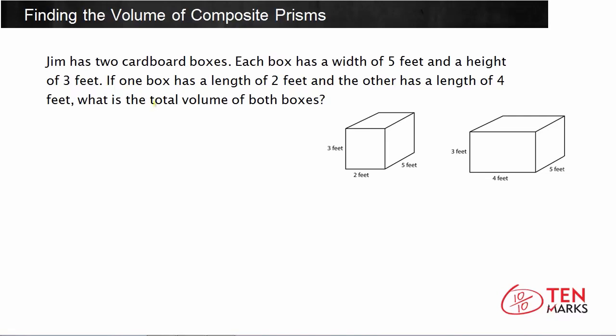So since you're looking for the total volume, you want to find the volume of the first box and the volume of the second box, and then combine it. There's something interesting about this problem, though. As you can see in the diagram, the height is the same for both boxes. They're both 3 feet tall. The width here is the same. They're both 5 feet wide. The only difference between these two boxes is the measurement for the length. One is 2 feet and one is 4 feet.